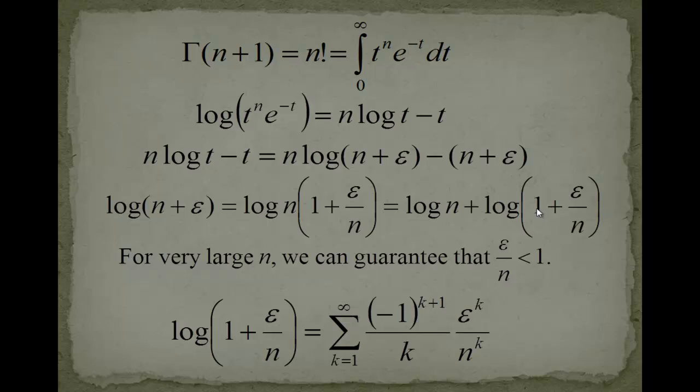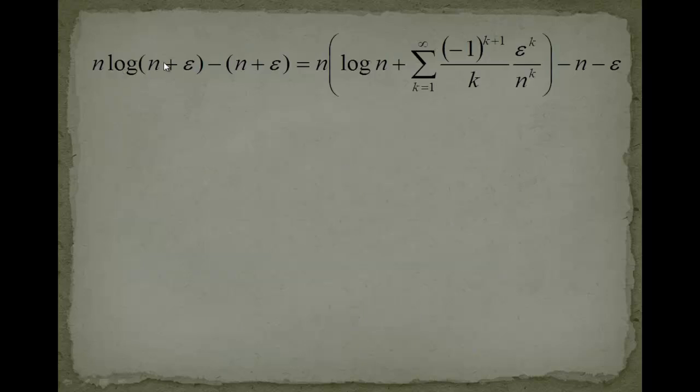Normally we had here an x to the k, but we have to plug in epsilon to the k over n to the k. And this is an alternating sum, so signs are changing all the time. Very important, starting from 1. Now we have this, we will just plug this into here, and then ultimately we will plug it back. We have n times log of n plus epsilon minus n minus epsilon. So now we plug in that stuff. n is equal to logarithm of n, and then we had logarithm of 1 plus epsilon over n, which we can write as a power sum, minus n minus epsilon. Now just let us multiply out.